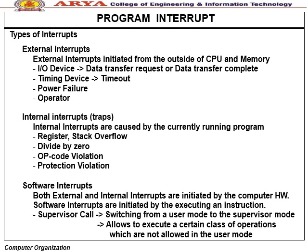Program interrupt types: External interrupt — initiated from outside CPU/memory (I/O device data transfer request or completion, timing device timeout, power failure, operator interrupt). Internal interrupt (traps) — caused by the running program (register stack overflow, divide by zero, code violations, protection violations). Software interrupt — initiated by instruction execution (supervisor call), switching from user mode to supervisor mode to allow execution of operations not permitted in user mode.